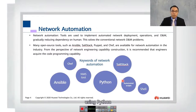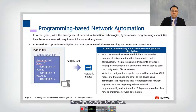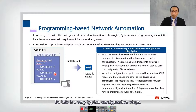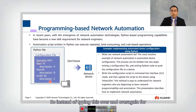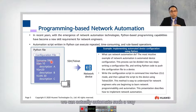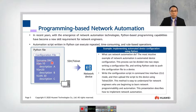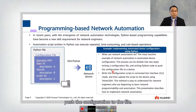Now let's look at programming-based network automation. Here you can see an example using Python. This is a typical configuration workflow — you type the hostname followed by the device name, then configure a VLAN, and add a description. Instead of typing this over and over again for a hundred switches, we can automate the whole process. For every device, we automate it based on IP address and system name. We can write Python code to push the configuration, and upload the script using Telnet or SSH.